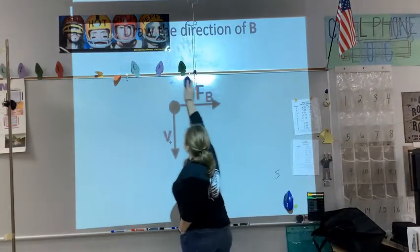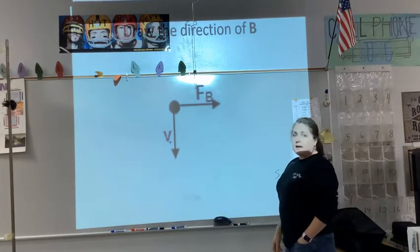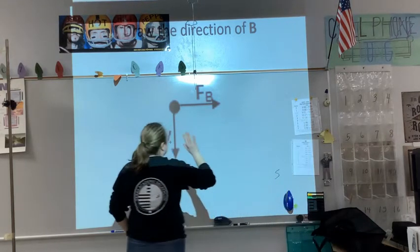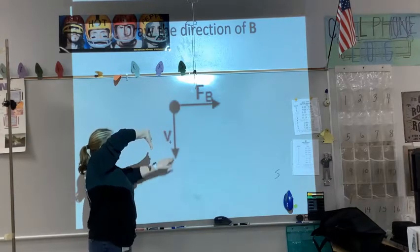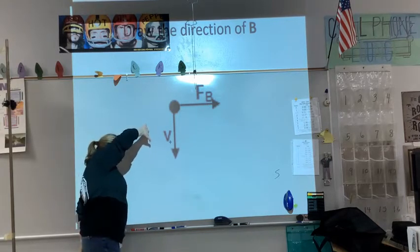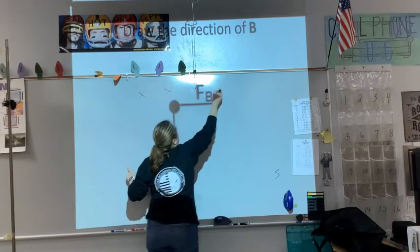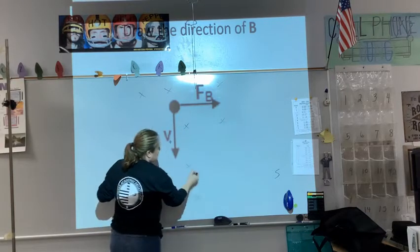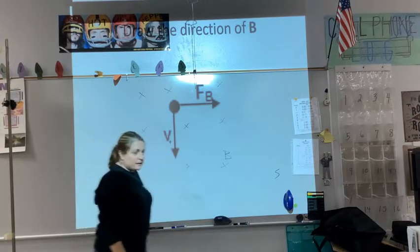In this example, it tells us the direction of the force and the direction of the velocity and asks us to determine the direction of the magnetic field. I've got to have my palm facing to the right, my thumb facing down in the direction of velocity, and I can see that my fingers would have to be directed into the board. So I would have a magnetic field directed into the board, represented with x's, and labeled B.